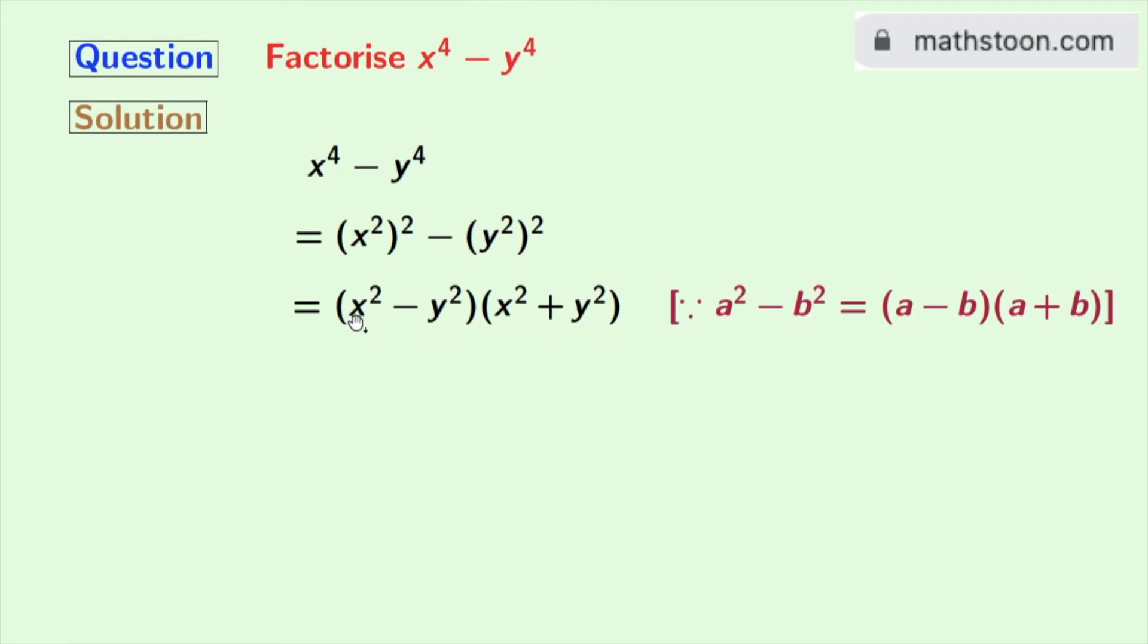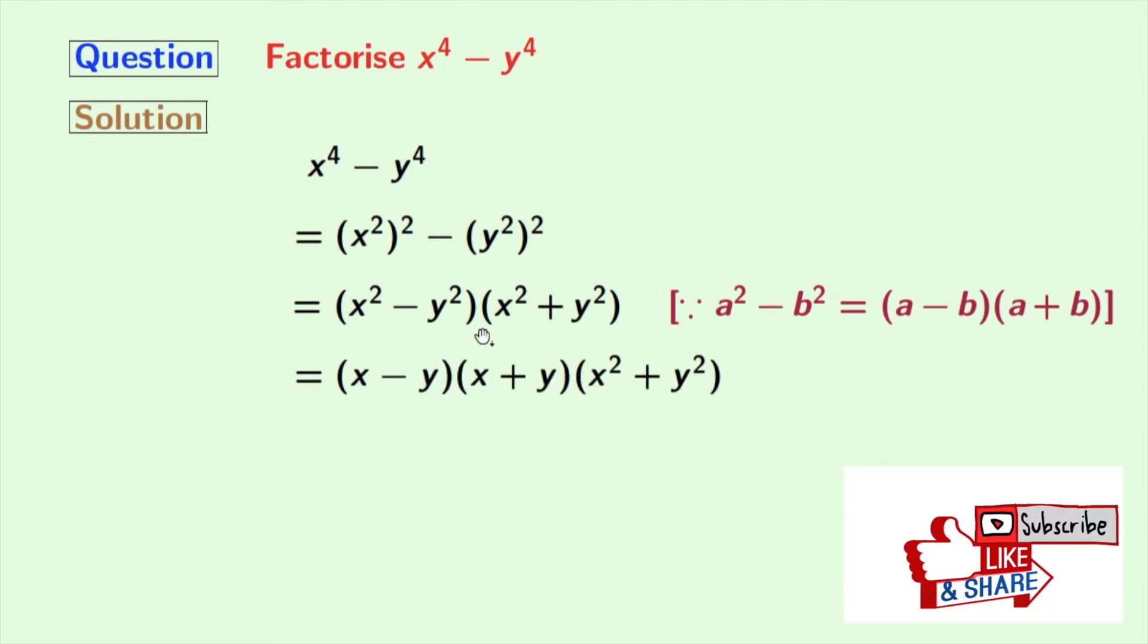Now look, the first part is again in the form of a square minus b square, where a is x and b is y. So we will apply the same formula again. Applying that we get x minus y times x plus y, and x squared plus y squared remains as it is. Now look, we cannot factorize this further, so we will stop right now.